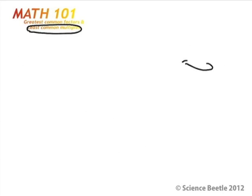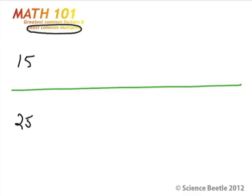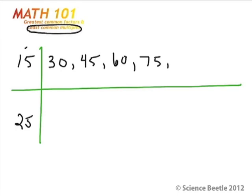One more problem. Let's go ahead and try 15 and 25, and figure out what the multiples of these two are going to be. We're looking for the least common multiple. 15 times 1 is 15, 15 times 2 is 30, 15 times 3 is 45, 15 times 4 is 60, 15 times 5 is 75, 15 times 6 is 90. Let's go ahead and stop there.